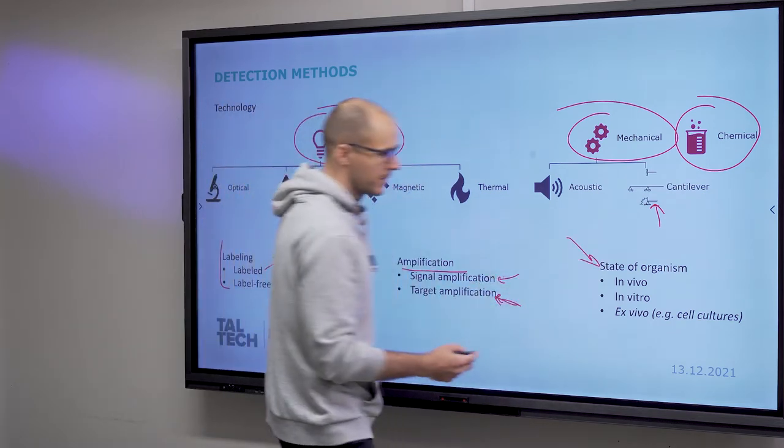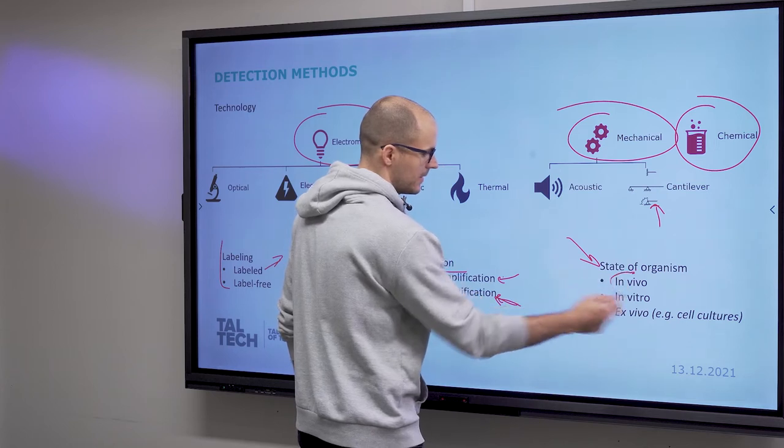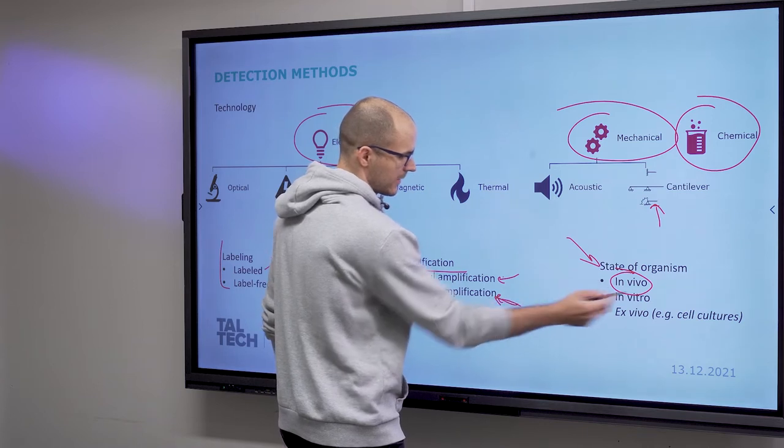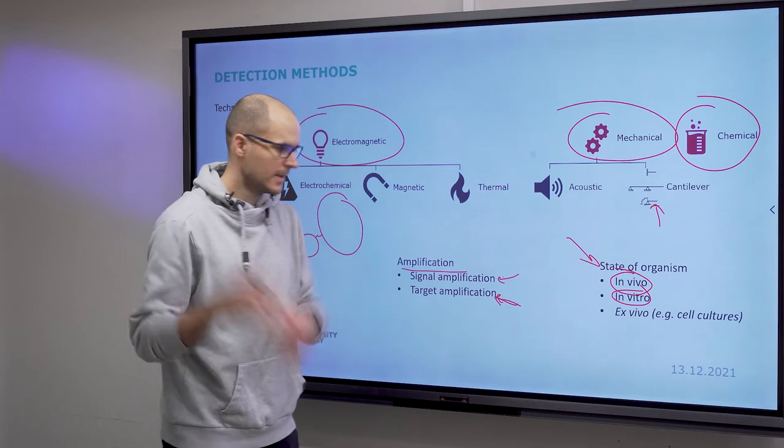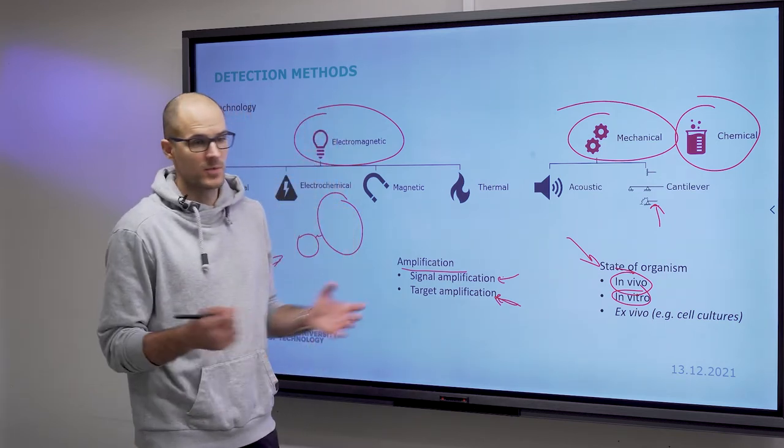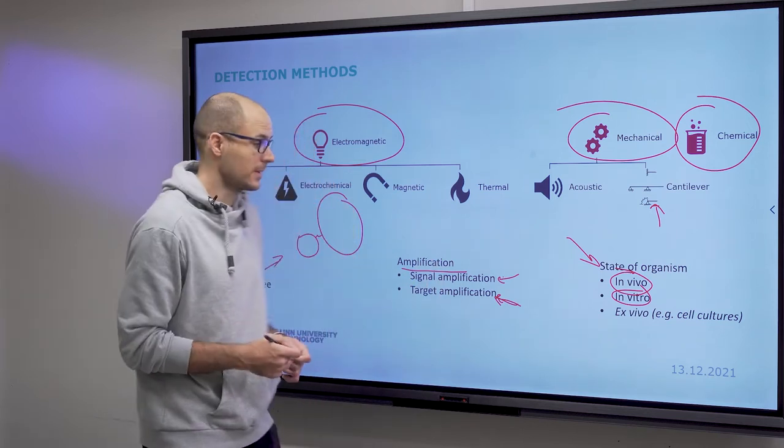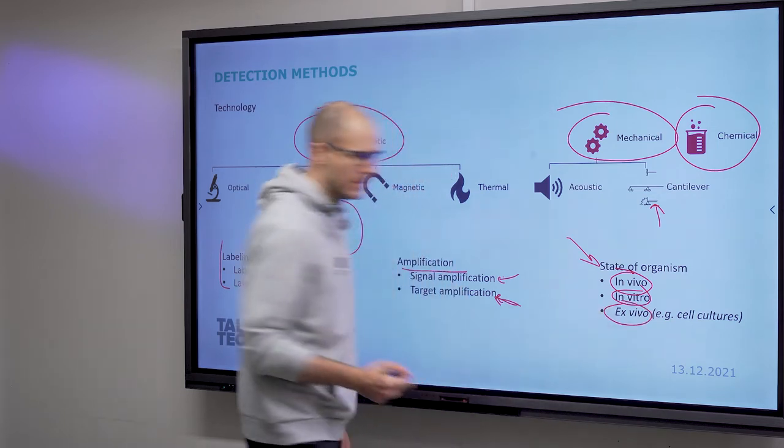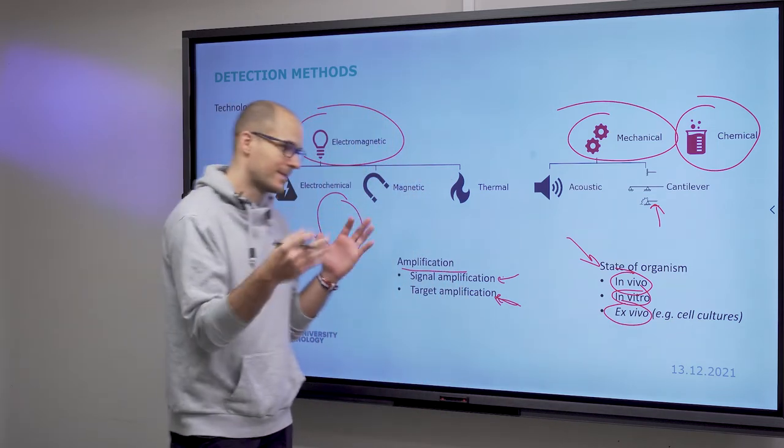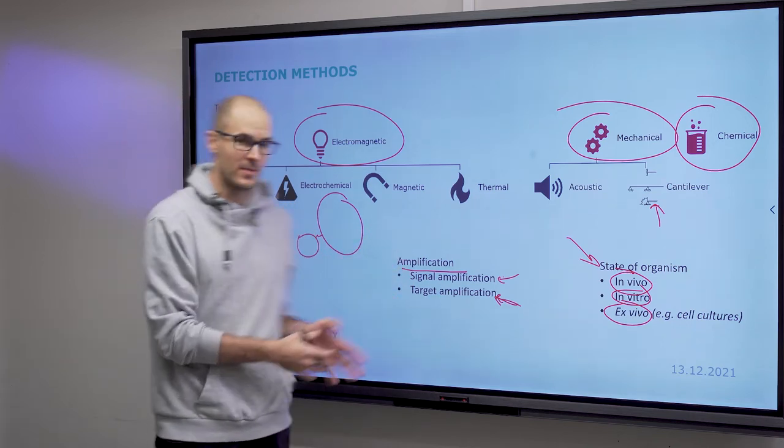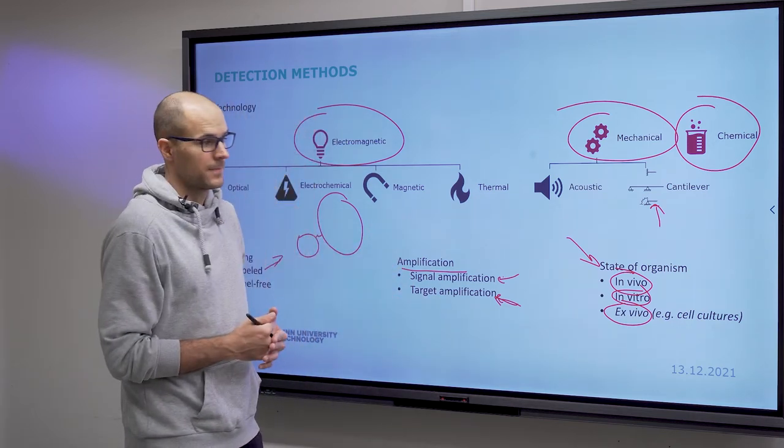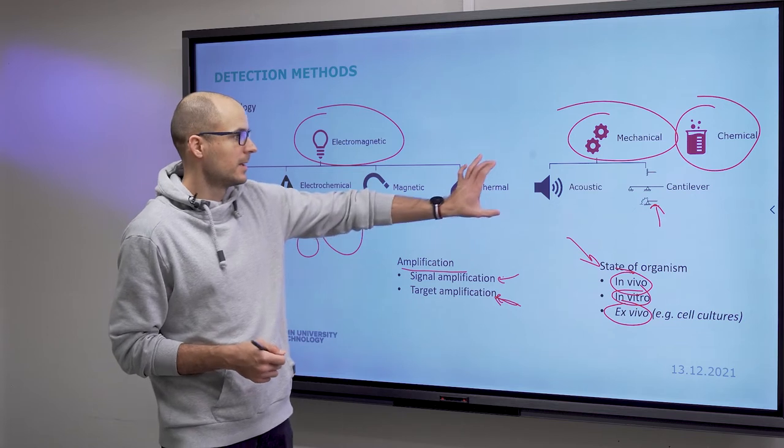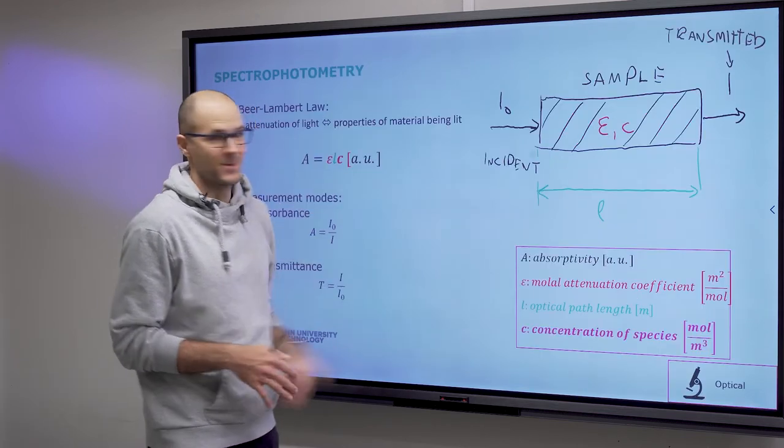Then based on the state of organism, your sensing scenario can be in vivo, so in living biological organisms, in vitro, which is in a laboratory or artificial conditions, not in a living organism. And then ex vivo, it would be also in vitro, but meaning that you take it from living organisms. For instance, you take a stool sample, and then you run it in the cell culture. That would be ex vivo, but it is also in vitro.